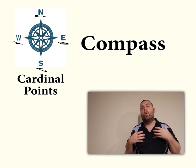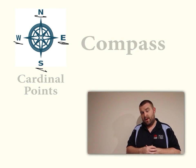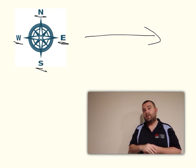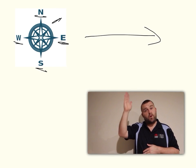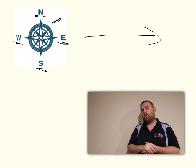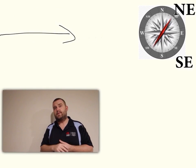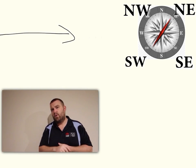Yet what if we want to be more accurate than that? Well we can look at the midpoint between both of those points. For example, the midpoint between north and east, we'll call that northeast. Same with southeast, southwest and northwest.